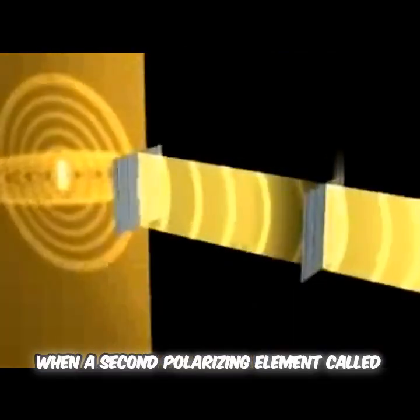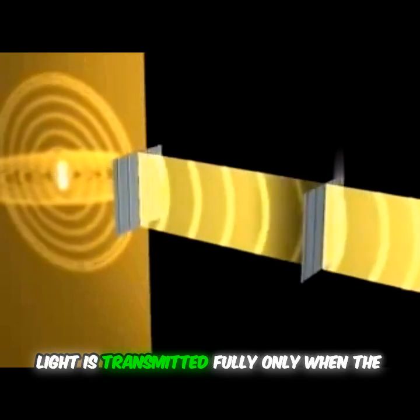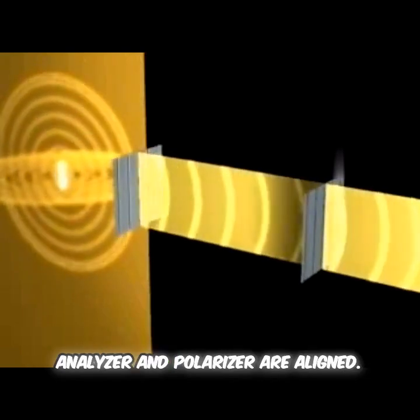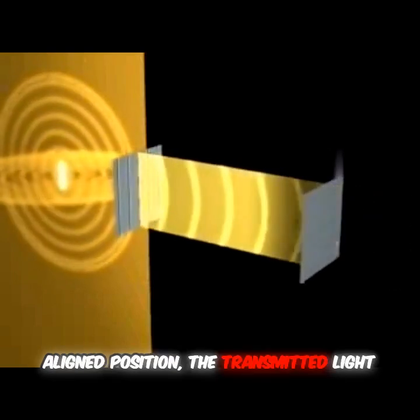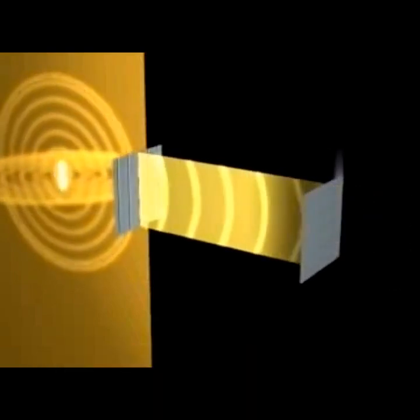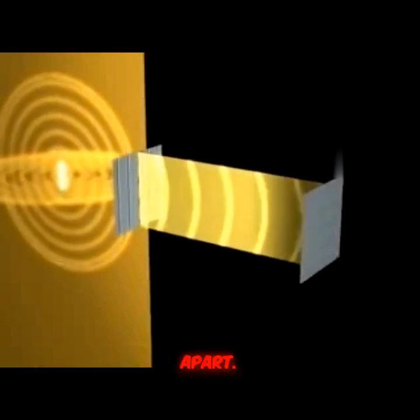When a second polarizing element, called the analyzer, is placed into the beam, the light is transmitted fully only when the analyzer and polarizer are aligned. As the analyzer is rotated from the aligned position, the transmitted light decreases and is blocked entirely when the polarizer and analyzer are 90 degrees apart.